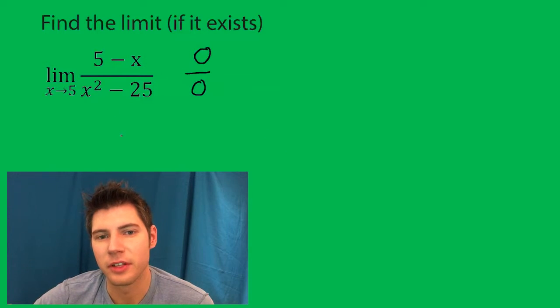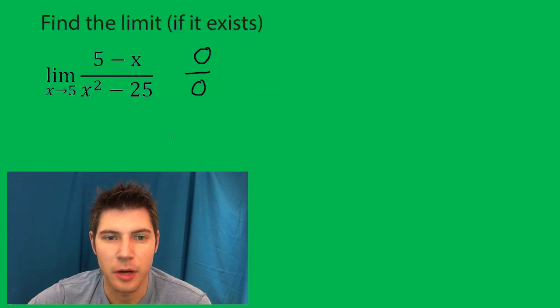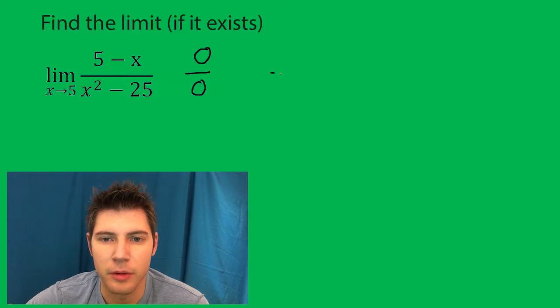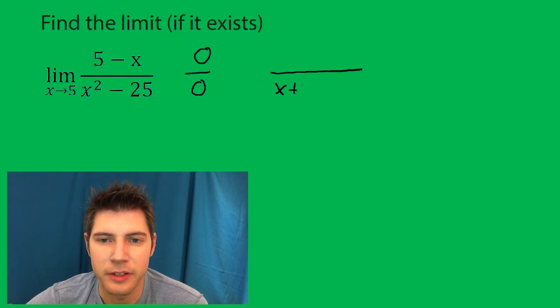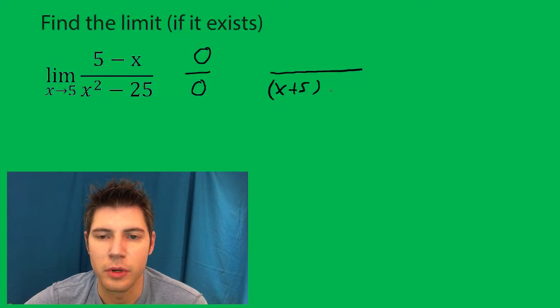The easiest way to simplify this now is you want to factor top and bottom as fully as you can. So if we go after the bottom first we're left with x plus 5 x minus 5 because it's a difference of two squares and the top is still 5 minus x.